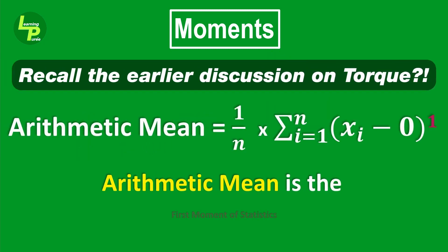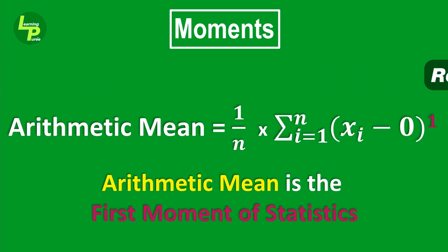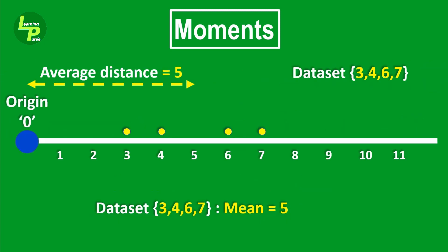This is the first moment of statistics. The net effect is as good as assuming as if we had all the data points stacked up at 5 units. Let us assume that we did have another data set with all points stacked up at 5 units from the origin.